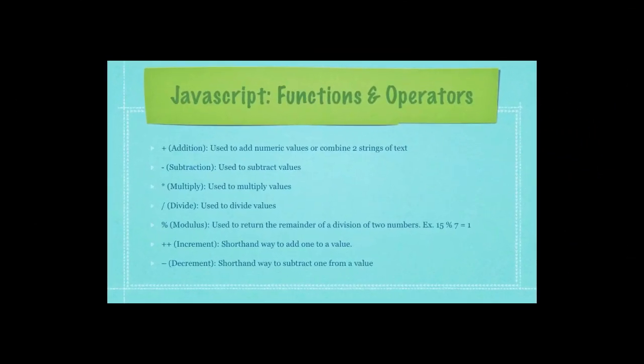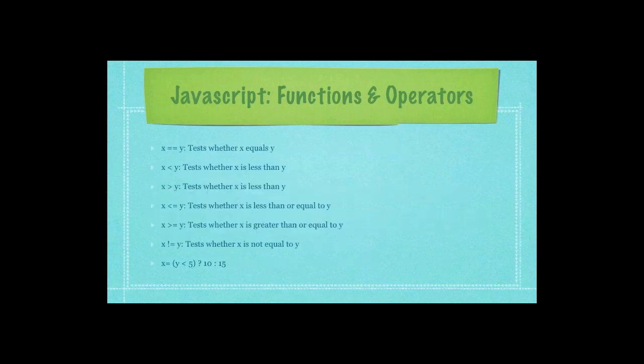Then we have different functions and operators in JavaScript. You have obviously the addition, the subtraction, the multiplication, the division. Then you have the odd modulus, which is used to return the remainder of a division of two numbers. Then you have increment, which is a shorthand way to add 1 to a value. Decrement, which is actually two negative signs together. That's shorthand for subtracting 1 from a value. Also, there are operators you use in your looping. Here, we're checking to see if x is equal to y, x is less than y, x is greater than y, and so forth and so on.